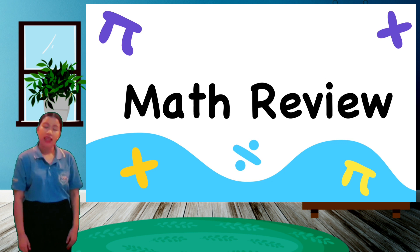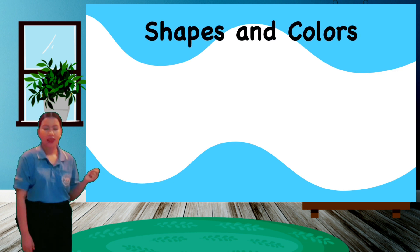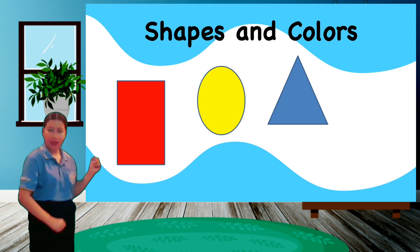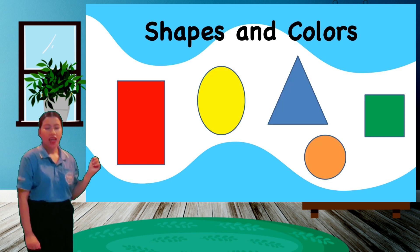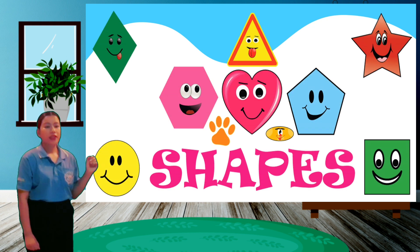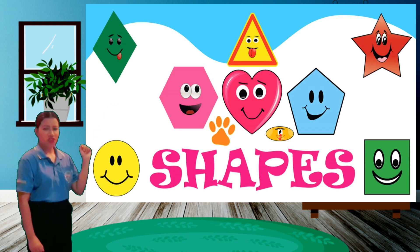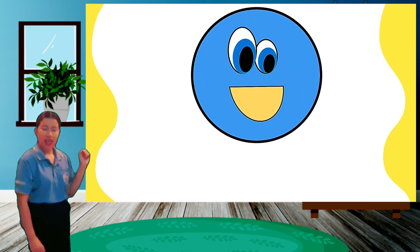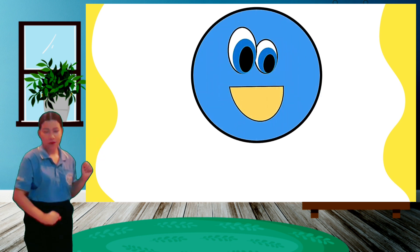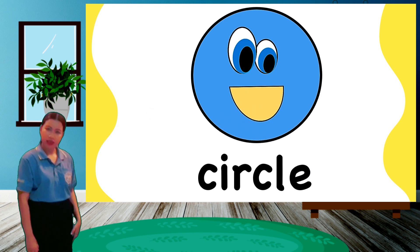Let's begin with the shapes and colors. Look at the pictures. We have here different shapes with different colors. First, look at the picture. What shape is it? It's a blue circle. Please repeat after me: a blue circle. Very good.